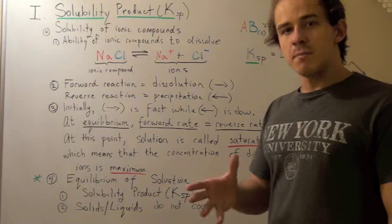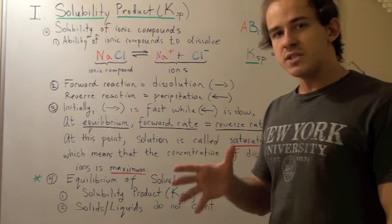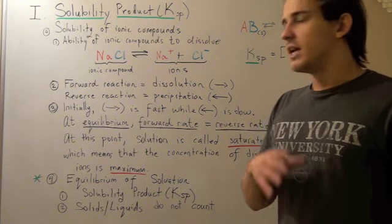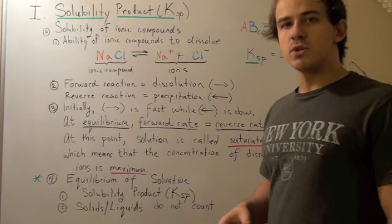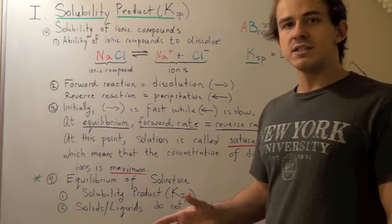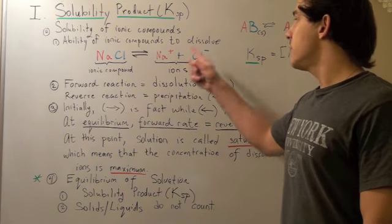All ionic compounds have the ability to dissociate into their ion form when added into water. For example, let's take sodium chloride. When we add sodium chloride into water, it dissociates into two ions: sodium and chloride.